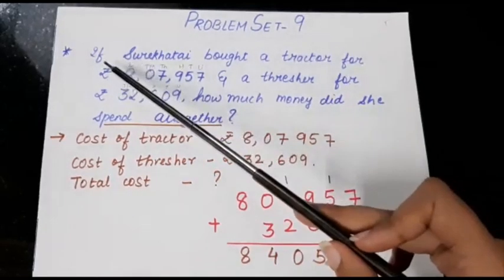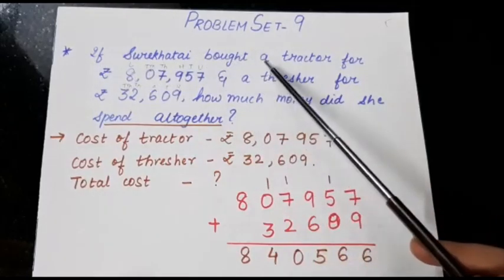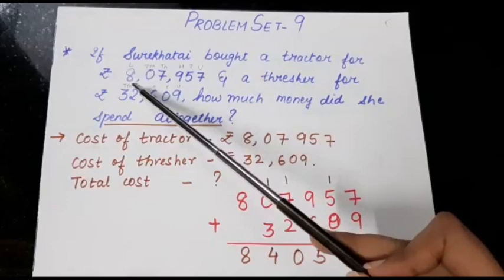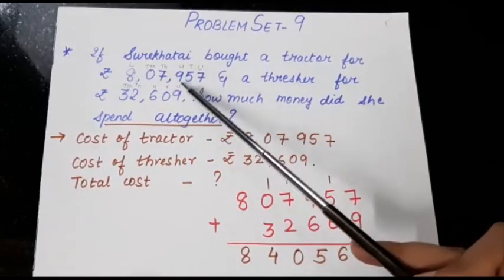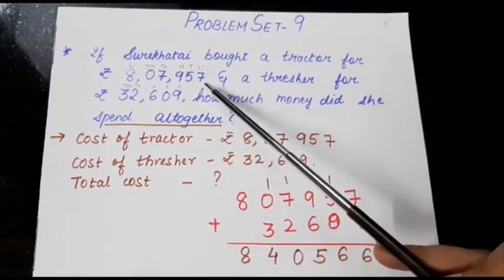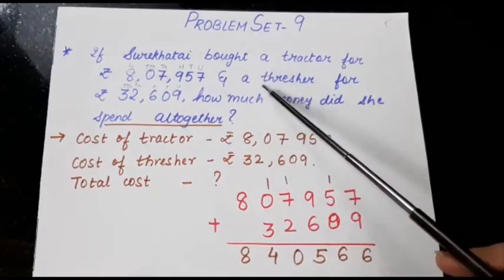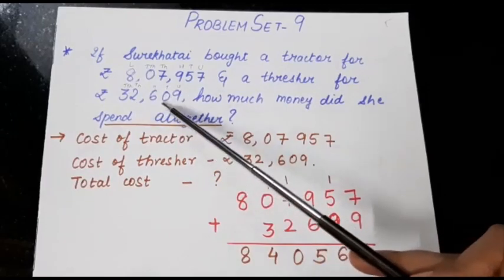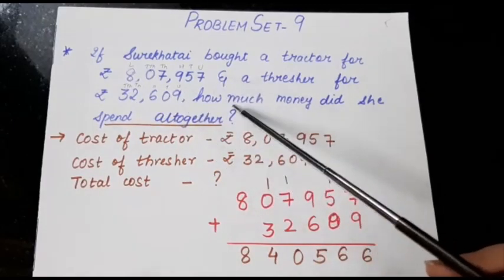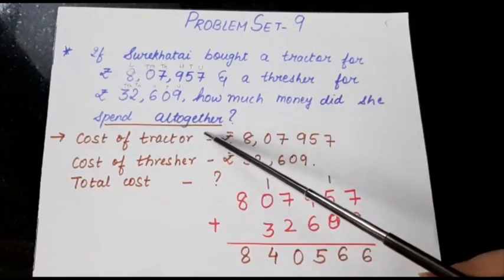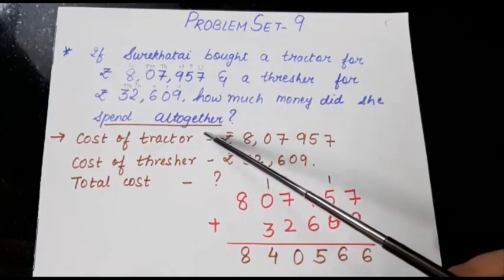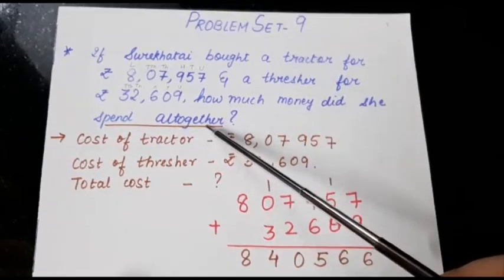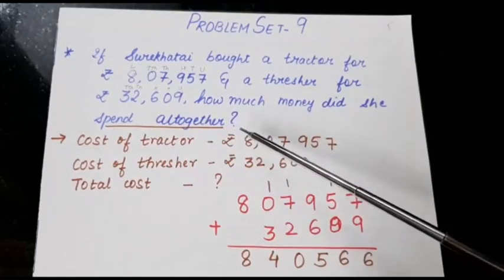Let us look at the question. If Surekha Thai bought a tractor for Rs. 8,07,957 and a thresher for Rs. 32,609. How much money did she spend all together? So here we have to find how much money did she spend all together? Total kitna amount usne spend kia?